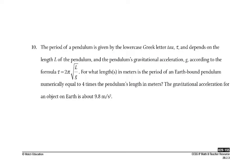The period of a pendulum is given by the lowercase Greek letter tau, which kind of looks like pi with missing a leg, and depends on the length L of the pendulum and the pendulum's gravitational acceleration g according to this formula. For what lengths in meters is the period of an earthbound pendulum numerically equal to 4 times the pendulum's length in meters? The gravitational acceleration for an object on earth is about 9.8 meters per second squared.